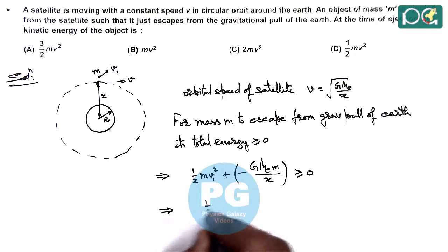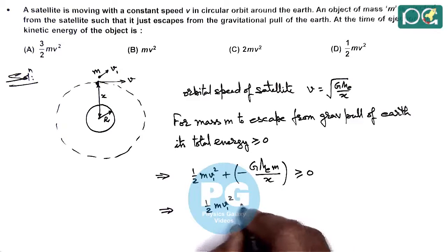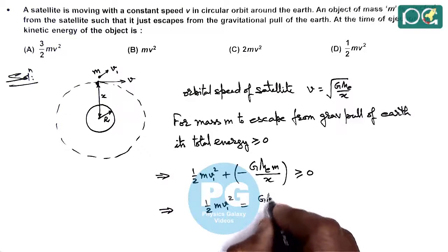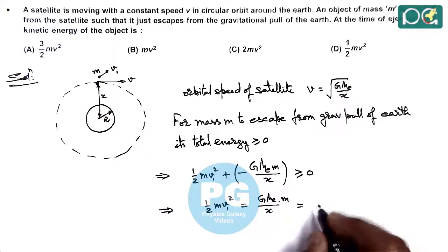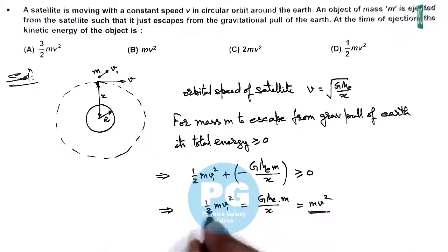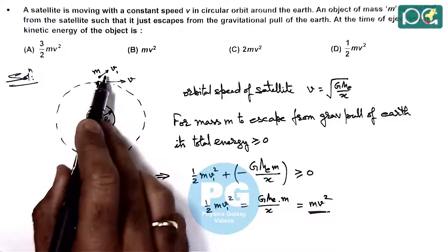This kinetic energy (1/2)mv1² can be written as (GME/x)m. Since GME/x equals v², this becomes mv². This is the kinetic energy of the ejected mass.